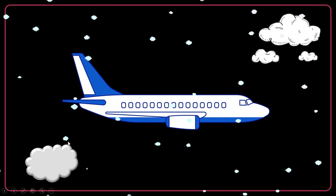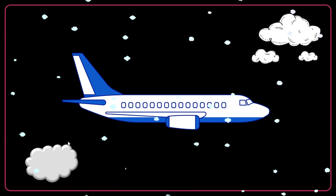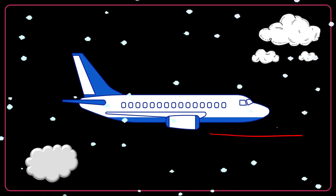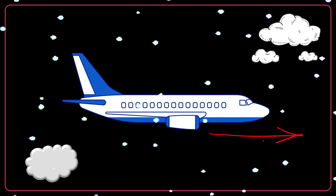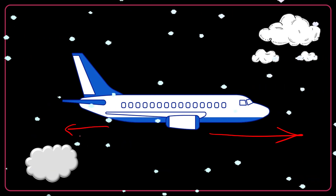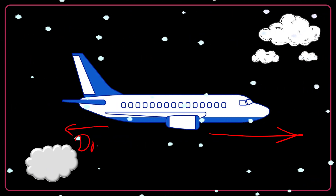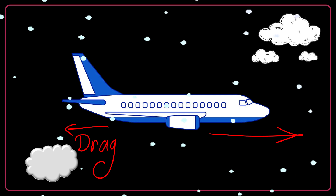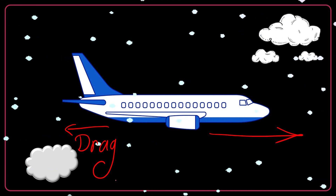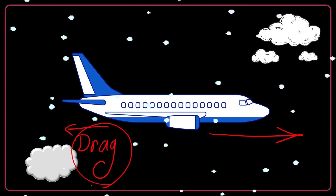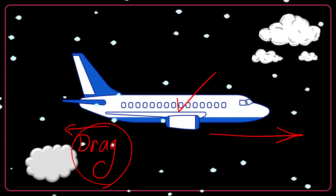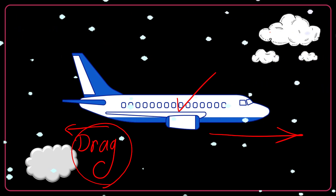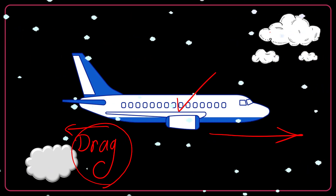Here I have an airplane acted upon by a rightward thrust force from the engines and also a drag force. Drag force is the opposition of the air against the motion. It is highly affected by the shape of the airplane, the density of the air, and also the speed.